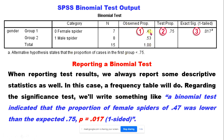The observed proportion is 0.47, and the test proportion from the hypothesis is 0.75. The p-value obtained is 0.017.